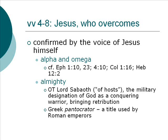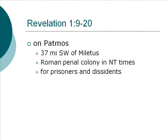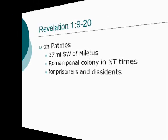John says in verse 9: 'I, John, your brother and fellow partaker in the tribulation, kingdom, and perseverance which are in Jesus, was on the island called Patmos because of the word of God and the testimony of Jesus.' Patmos is about 37 miles southwest of Miletus. If you're familiar with the southwestern coast of Turkey, you go to Ephesus and straight south to Miletus, then out into the Aegean Sea is this island called Patmos. It was a Roman penal colony — like the Alcatraz of its day — for prisoners and dissidents, people who criticized the emperor and were banished from the mainland.